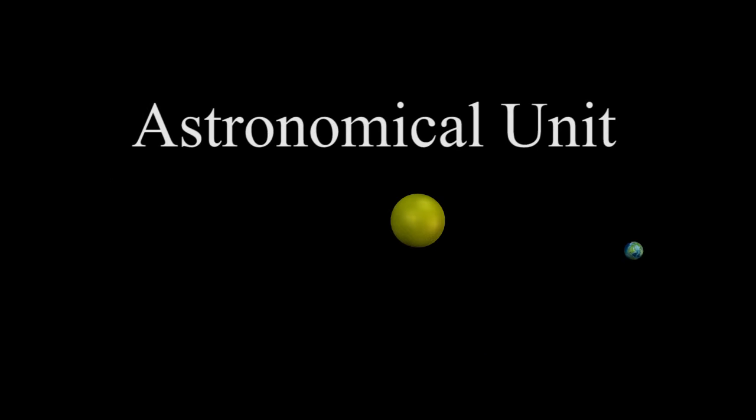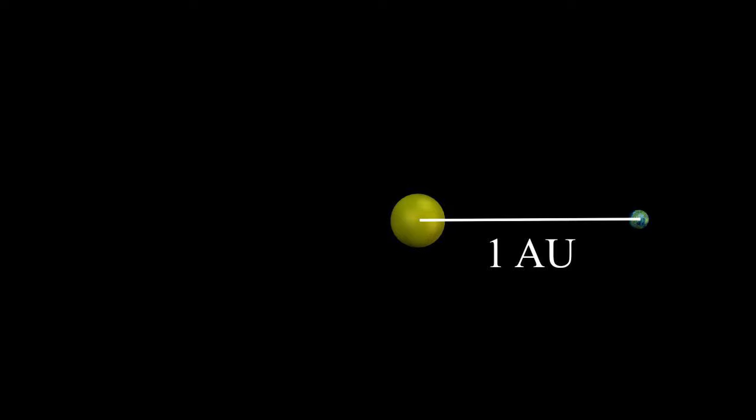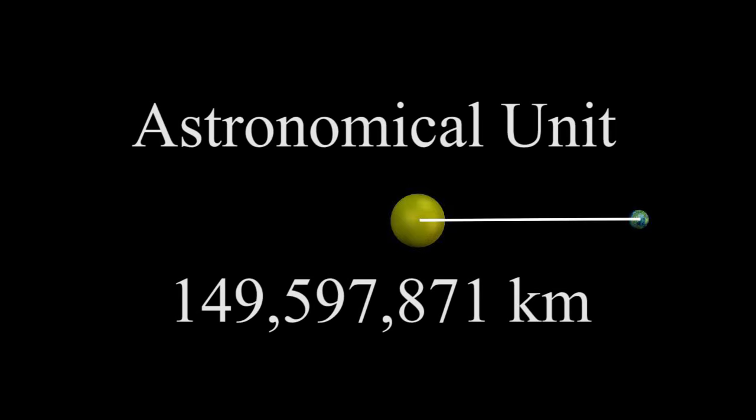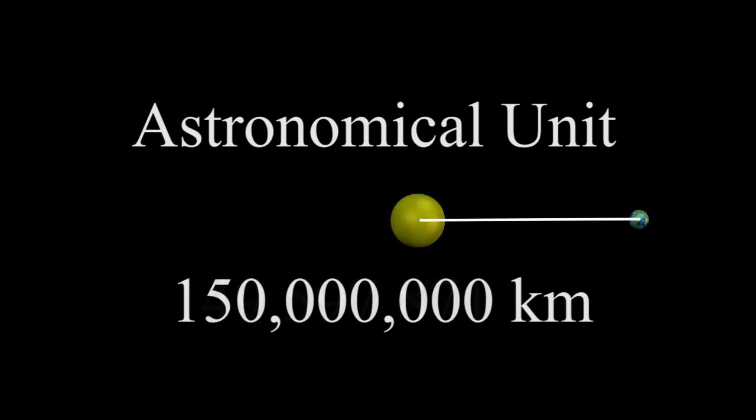One astronomical unit is the average distance from the Earth to the Sun. This definition has recently undergone some refinement, but the value remains close to the average distance from the Earth to the Sun. This number rounds to 150 million kilometers, easier to remember.